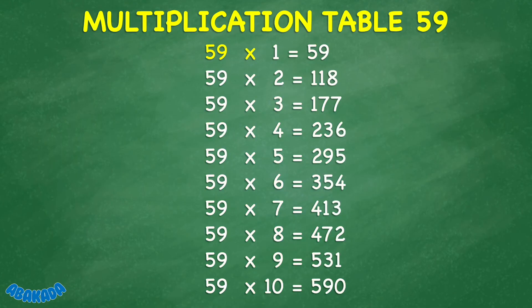59 times 1 equals 59. 59 times 2 equals 118. 59 times 3 equals 177. 59 times 4 equals 236. 59 times 5 equals 295.